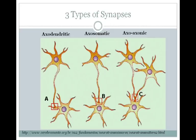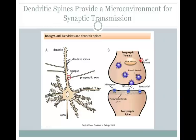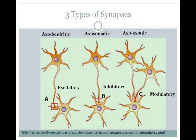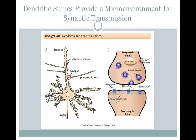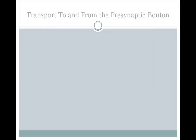In addition to the different anatomical locations of these synapses, they also have some functional differences. In general, most of your axodendritic synapses are excitatory. Most of your axosomatic synapses are inhibitory. And most of your axoaxonic synapses are modulatory — that means they alter the amount of neurotransmitter released from their post-synaptic cell. Some axodendritic synapses synapse onto specialized structures on the dendrite called dendritic spines, which provide a post-synaptic microenvironment for synaptic transmission and have been implicated in synaptic plasticity as well as learning and memory.